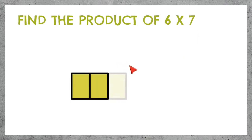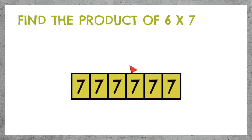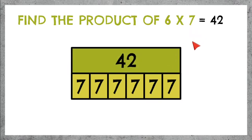6 times 7 — we need 6 parts with 7 in each one. Let's add up all the 7s and we get 42. 6 times 7 equals 42.